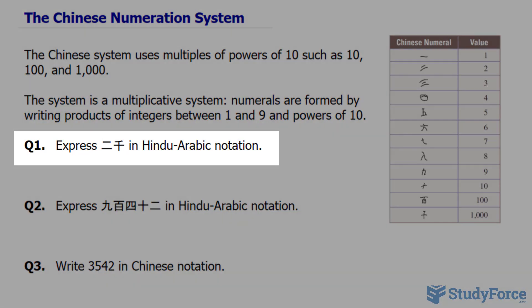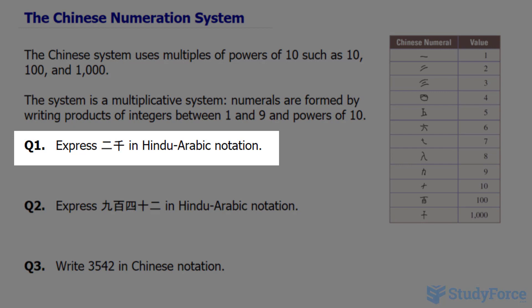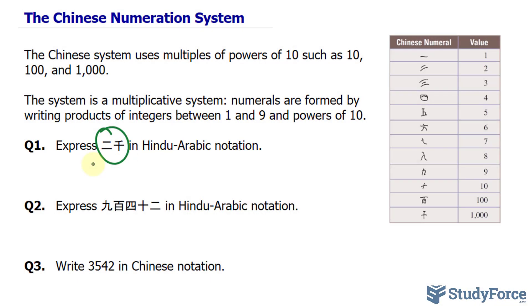In question number 1, they want us to express the following number that's in Chinese into Hindu-Arabic notation. Hindu-Arabic notation is just a fancy way of saying write it in numbers between 0 and 9.